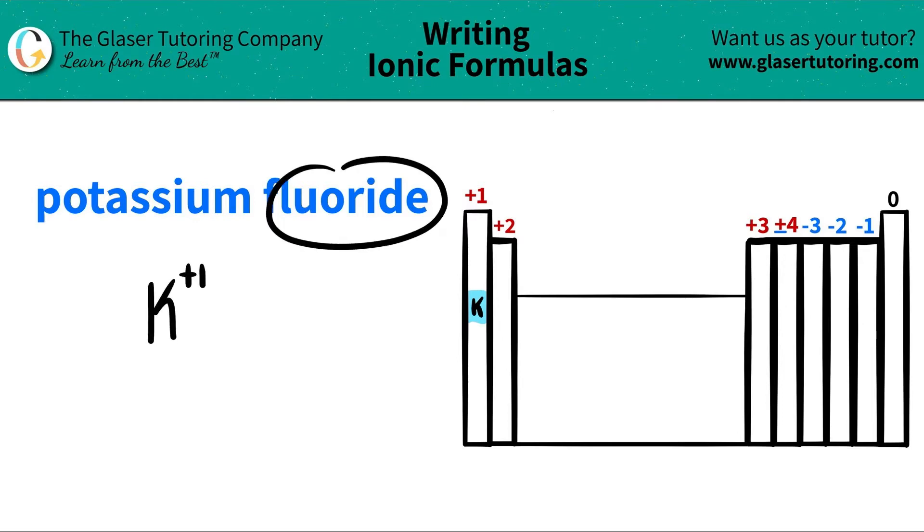The next element that I see is fluoride. I know this is an element because it has an IDE ending, so it came from fluorine. If I scan the periodic table, fluorine is over here. It's part of the halogens. It's represented by an F, and all the halogens are in this oxidation trend of having a negative 1 charge.